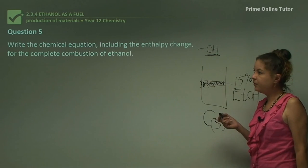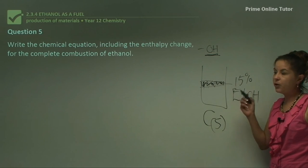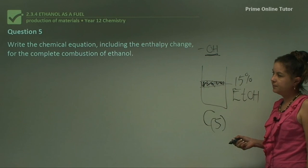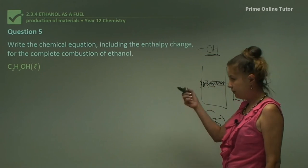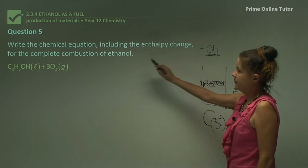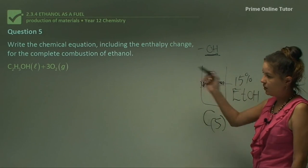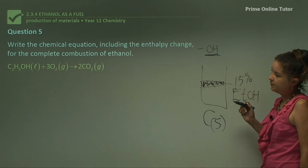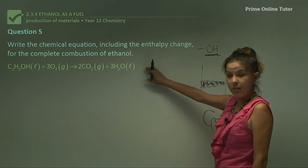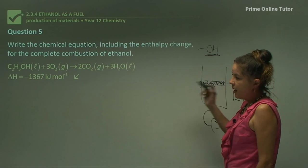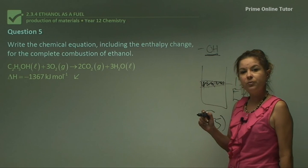Finally, Question 5: write the chemical equation including the enthalpy change for the complete combustion of ethanol. We start with ethanol, C2H5OH (l), burning in oxygen — so we add 3O2 (g) — and it produces CO2 (g) and H2O (l). The enthalpy change, delta H, is −1,367 kilojoules per mole. That completes the discussion about using ethanol as a fuel.